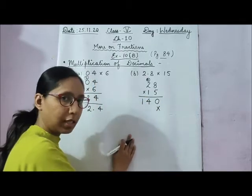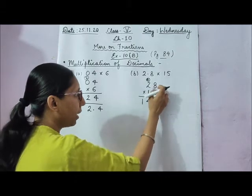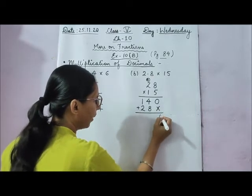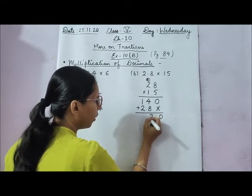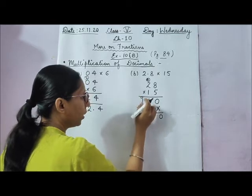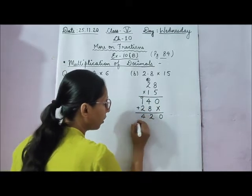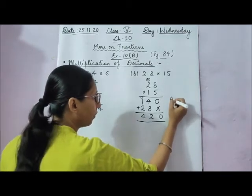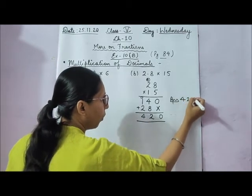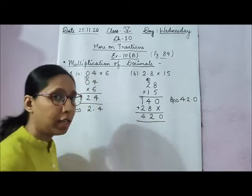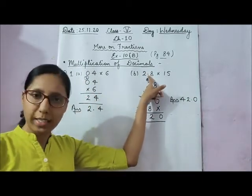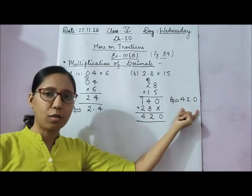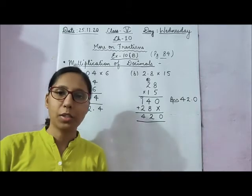Put a cross mark for the second row. 1 times 8 is 8, 1 times 2 is 2. Now add: 0, then 8 plus 4 is 12 — write 2, carry 1 — then 1 plus 1 is 2, plus 2 is 4. So this gives 420. But the answer will be 42.0, because in the question there is 1 digit after the decimal point. That's why we mark 1 digit before the point in the answer. So the answer is 42.0.